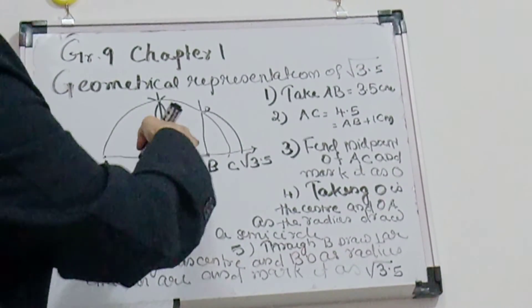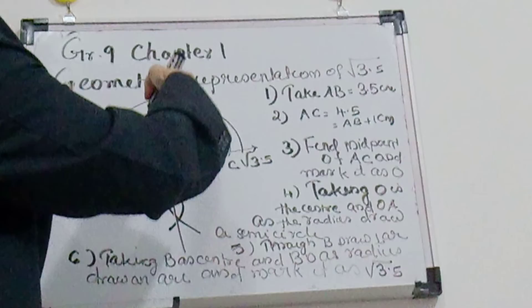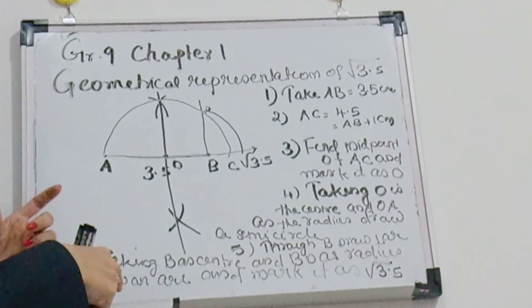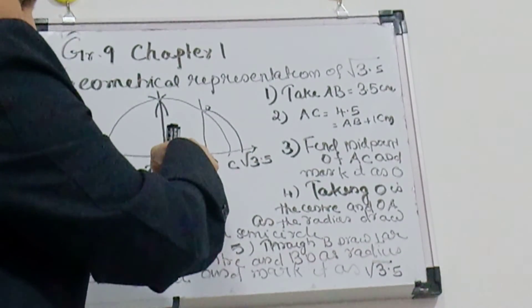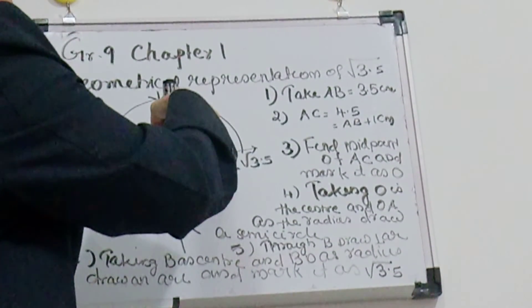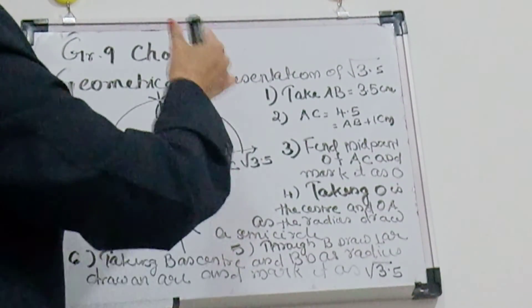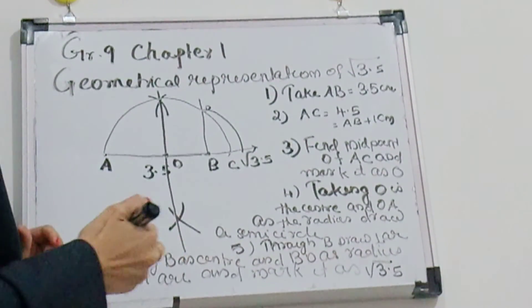Then through B you draw a perpendicular which intersects the semicircle. And keeping B as center and BD as the radius, you draw an arc. So this is the root of 3.5.